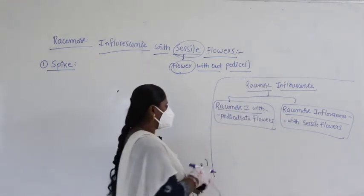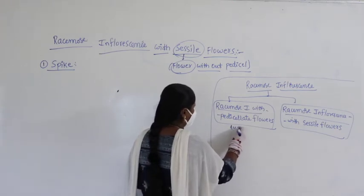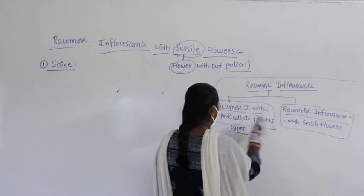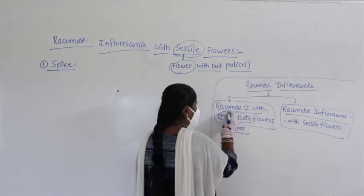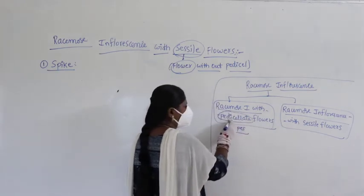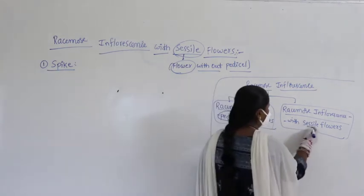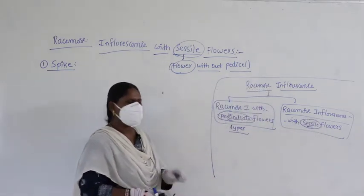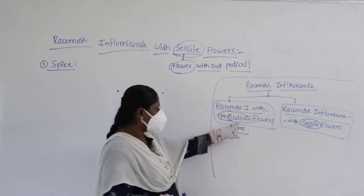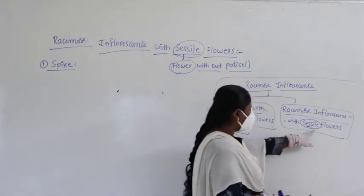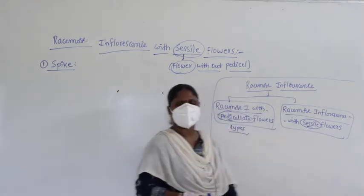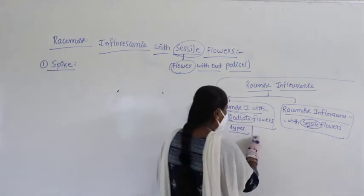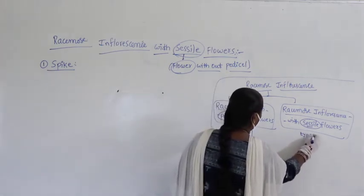Now, what is the difference between these two types? If you clearly observe, we need to find the pedicle. Without pedicle, the flowers are sessile. When flowers have a pedicle — a stalk — they are called pedicillate flowers. Flowers without a stalk are called sessile flowers.